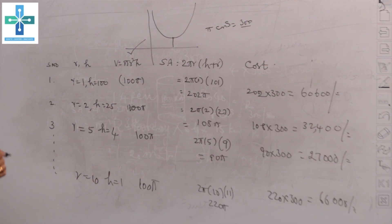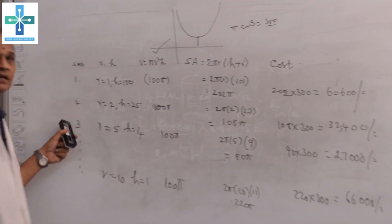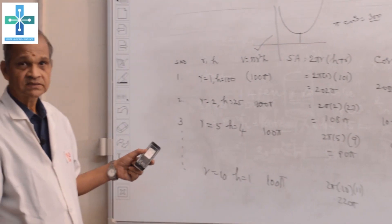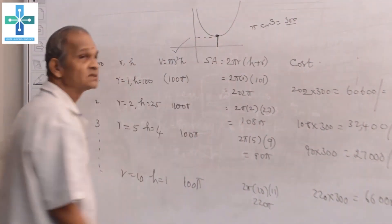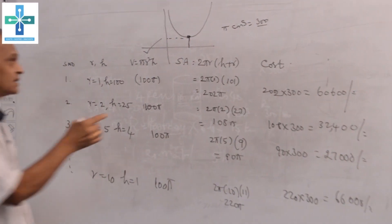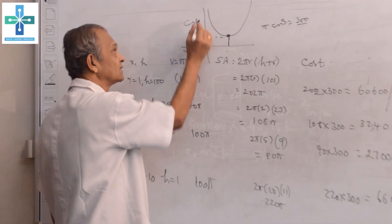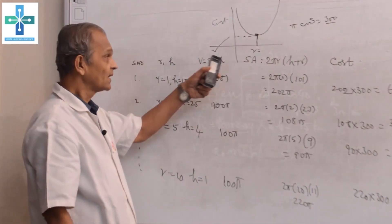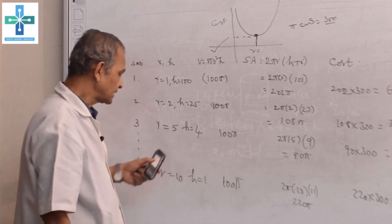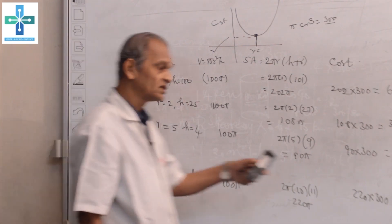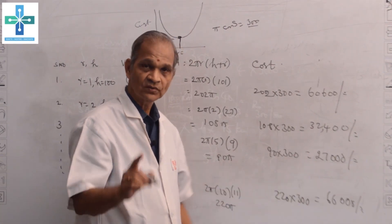The graph may be like this. The cost is decreasing and it is increasing, and there is a point, the minimum point. How to find out the minimum expenditure or minimum cost of constructing this? We cannot go on trial. Calculus will help us to identify the minimum value, the minimum cost, where it turns.